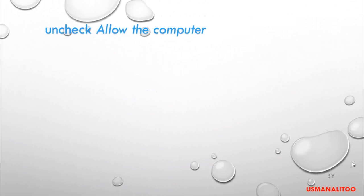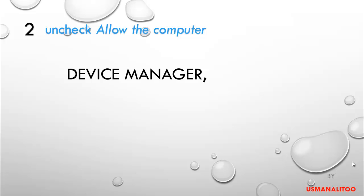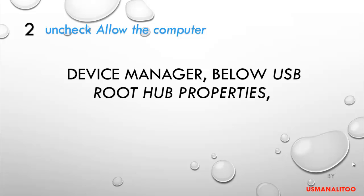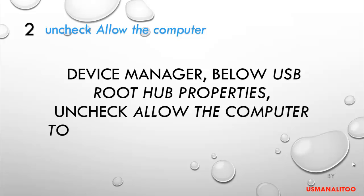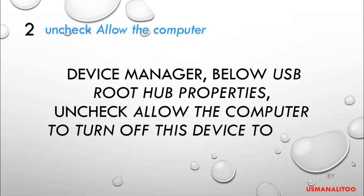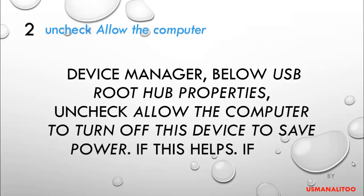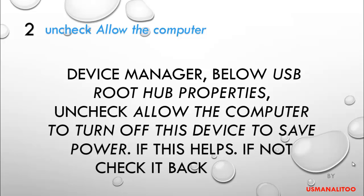Method number two: in Device Manager, go to USB Root Hub Properties and uncheck 'Allow the computer to turn off this device to save power.' If this checkbox is not checked, check it and then uncheck it again.